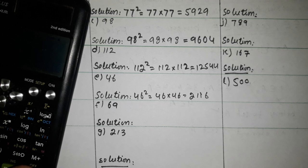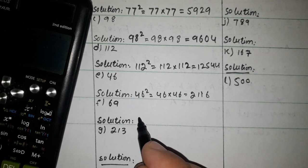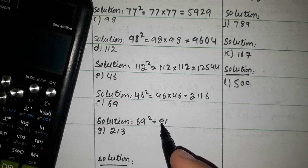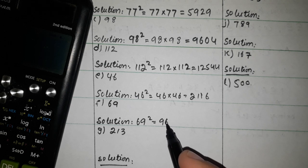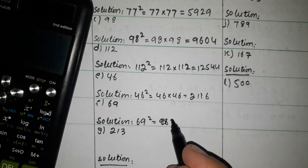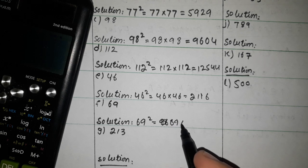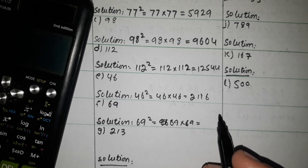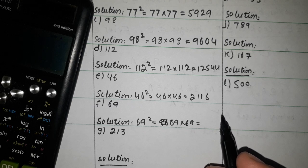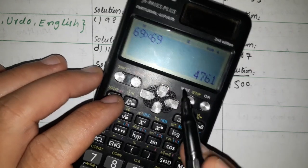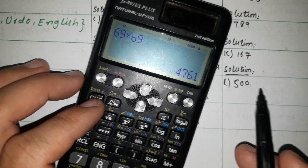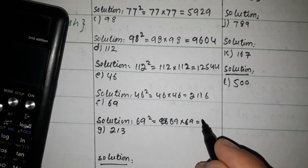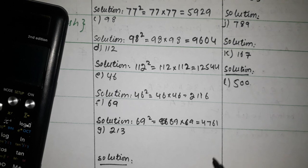Now 69 square. We multiply 69 by 69. 69 multiplied by 69 — the answer is 4761. So 69 squared equals 4761.